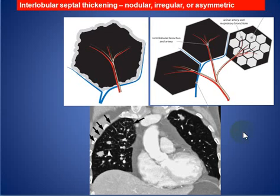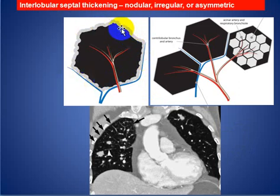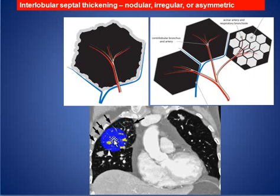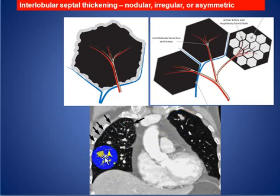Another pattern of interlobular septal thickening can be irregular and nodular in shape, as seen in this sketch. Here you see the secondary pulmonary lobule with some thickening and the interlobular septum with some nodularity. In this patient there is an association with multiple nodules due to metastasis.